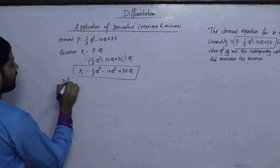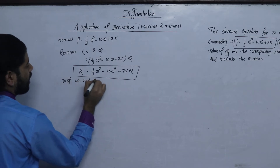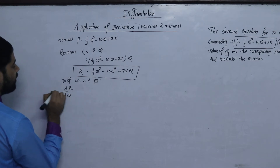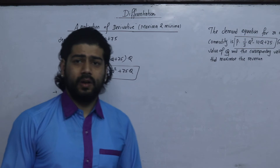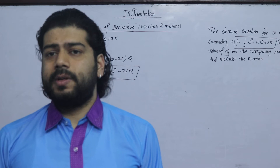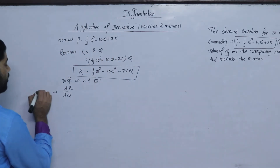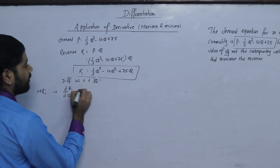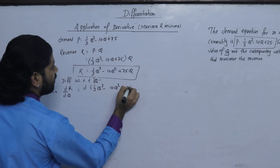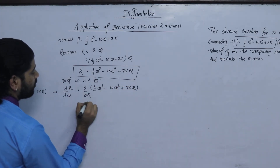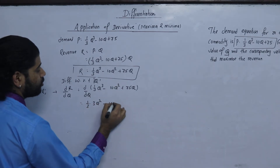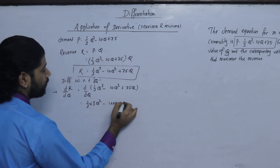The first step is differentiating with respect to Q. The derivative of revenue with respect to Q gives marginal revenue. The revenue function is (1/3)Q³ minus 10Q² plus 75Q, so differentiating: 1/3 into 3Q² minus 10 into 2Q plus 75, giving marginal revenue equals Q squared minus 20Q plus 75.